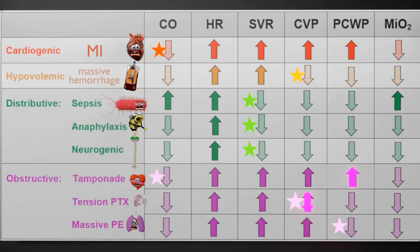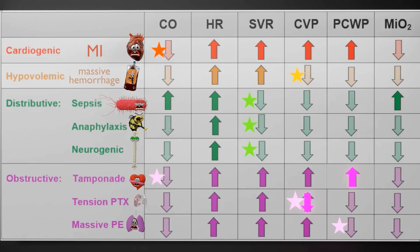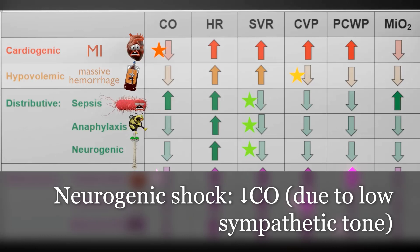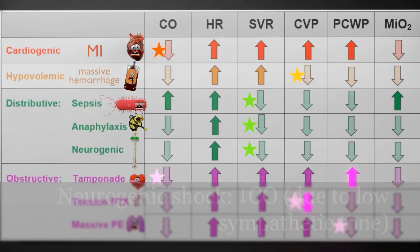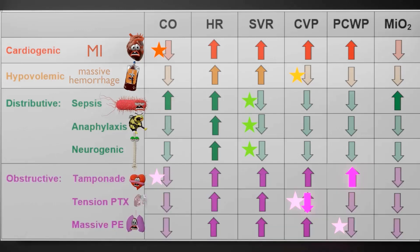Neurogenic shock can be due to trauma, for example, and as mentioned there's loss of sympathetic tone — the body simply can't vasoconstrict. That's why it's a type of distributive shock. But neurogenic shock differs from septic shock because in neurogenic shock, due to the decrease in sympathetic tone, cardiac output will be reduced. For distributive shock overall, focus on decreased SVR — systemic vascular resistance — due to the increased vasodilation.